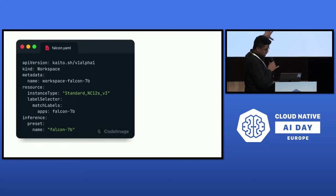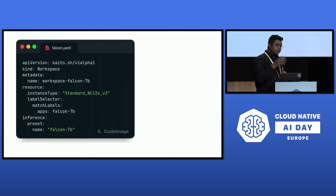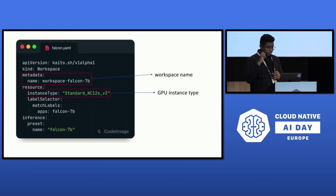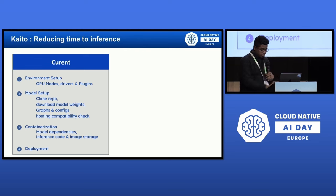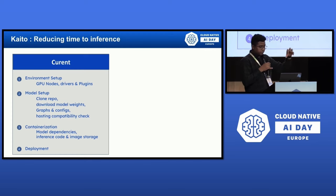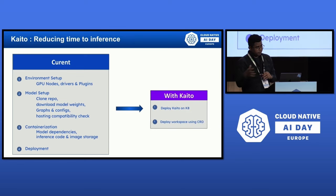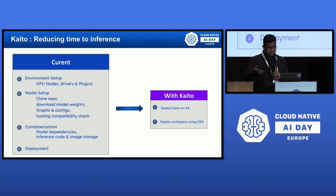This is the only YAML you need to write to deploy a model. Once you deploy KAITO and enable it on a cluster, all you have to do is write this YAML file. You give a workspace name, specify the GPU type or instance to use, and choose some presets. Then you do kubectl apply to the cluster. Once applied, it gives you an HTTP endpoint to talk to the model and generate responses.